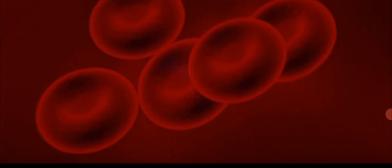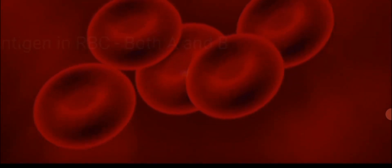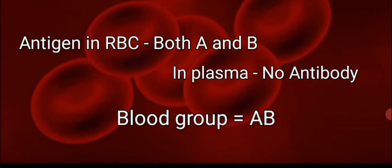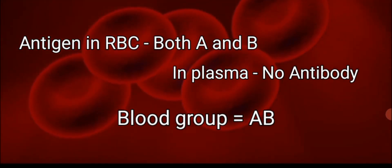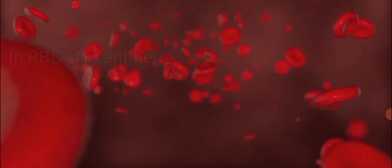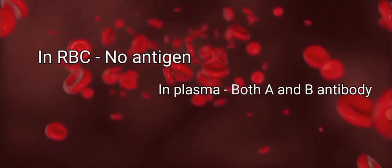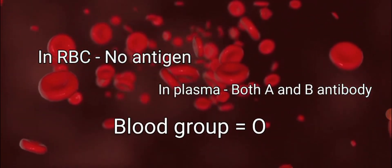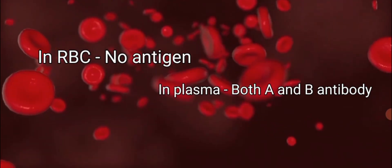If the antigens are both A and B but there are no antibodies, then the blood group that will be formed will be AB. Similarly, if there are no antigens but there are both antibodies A and B, then the blood group that will be formed will be O.